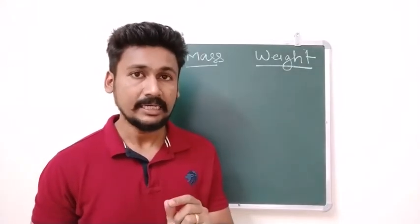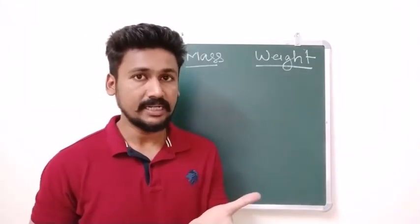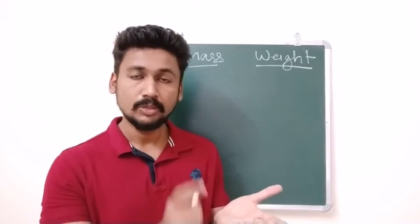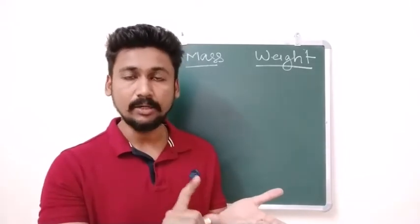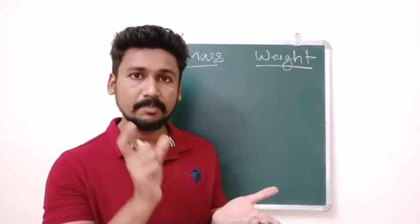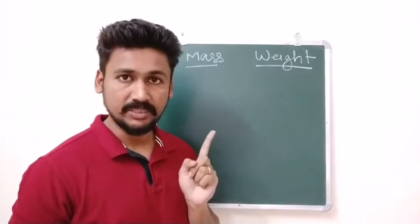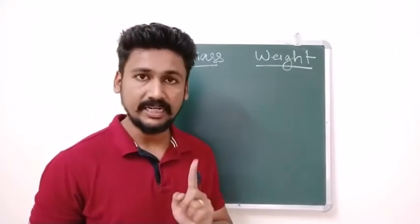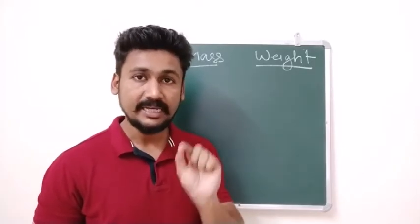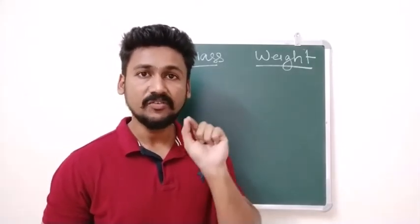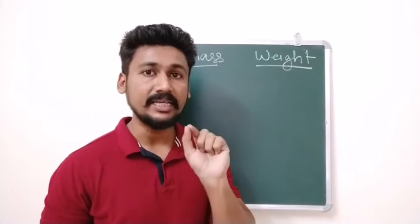So remember whenever we say that an object is of 1 kg, kilogram is a unit of its mass. So 1 kg signifies the mass of the object. Then what is the weight of the object? Weight of an object is actually the force of gravitation exerted by the earth.